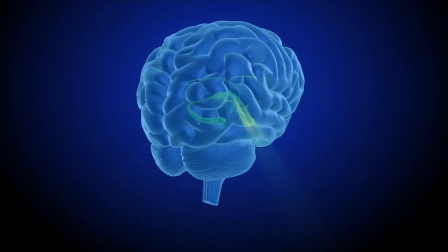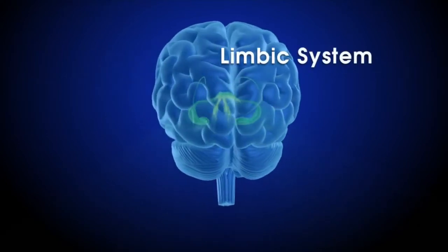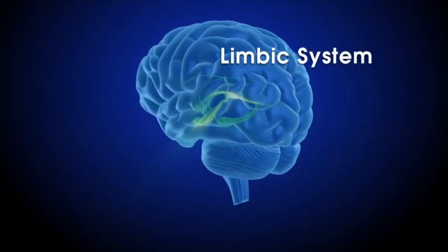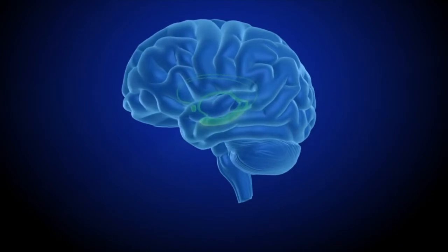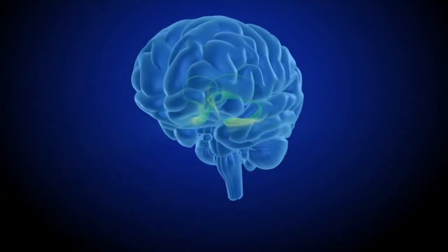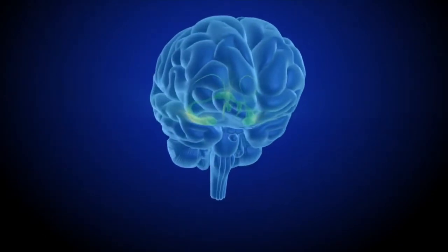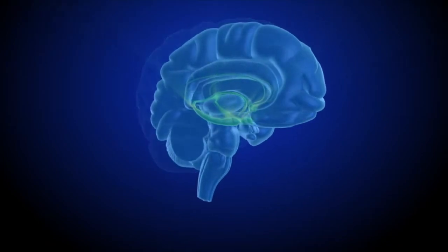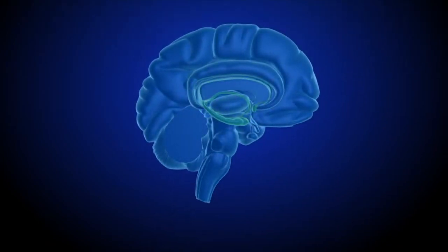Deep within the brain is a set of structures called the limbic system. The limbic system lies below the cortex, or outer layer of the brain. In evolutionary terms, the limbic system is quite old compared with the cortex.